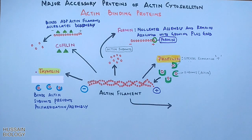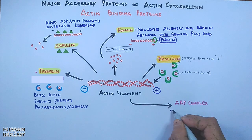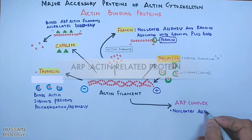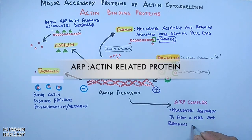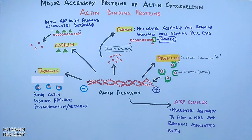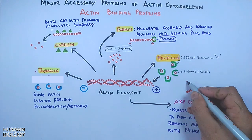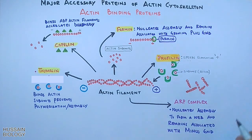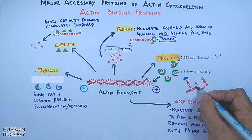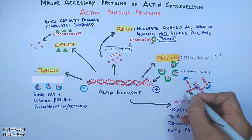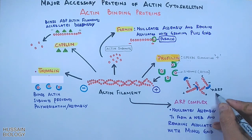Furthermore, there is another nucleating protein which is the ARP complex — actin related protein. This ARP complex, just like formin, also nucleates assembly, but this protein remains associated with the minus end. Here in this diagram you can see the ARP complex forms a web-like, three-dimensional structure of actin filaments.